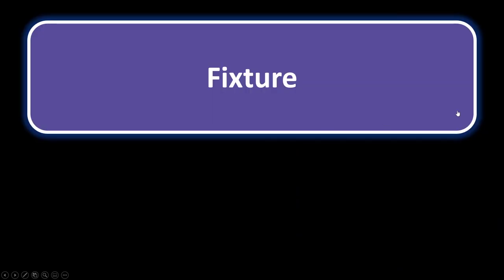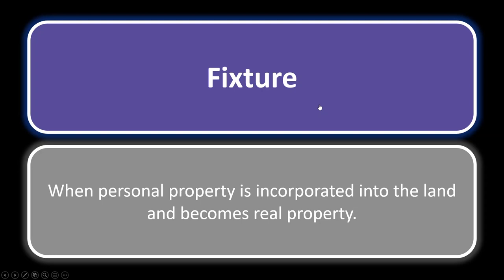Fixture. This is personal property that, because of the way it's attached or affixed to the land, is considered real property. The technical term: when personal property is incorporated into the land, it becomes real property and is a fixture. For example, a microwave built into the cabinetry or wall is considered real property — it's a fixture. We use the MARIA test to determine if something is a fixture: Method of attachment, Adaptability, Relationship, Intent, and Agreement.